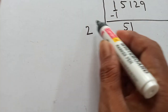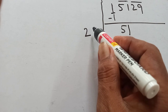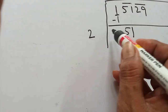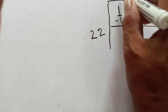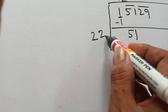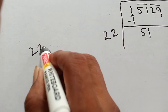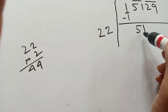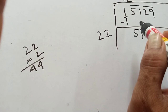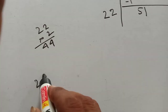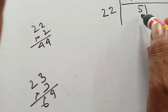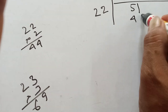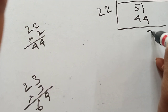Place one number here and multiply — that number must give a product less than or equal to 51. Try 2: write 2 here and also here, so multiply 22 by 2 — that means 22 into 2 equals 44. 44 is less than 51, so 2 times will go. Try 3: 23 into 3 is 69, which is greater than 51. So 2 times goes. Write 44, subtract: 51 minus 44 equals 7. Bring down next pair: 729.